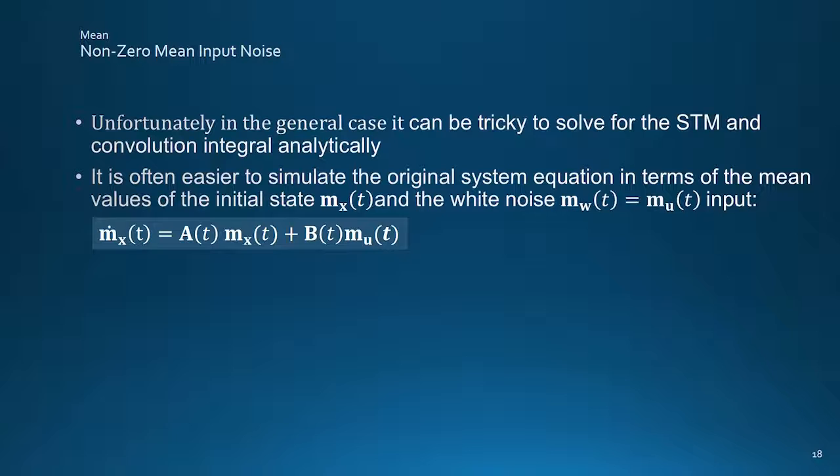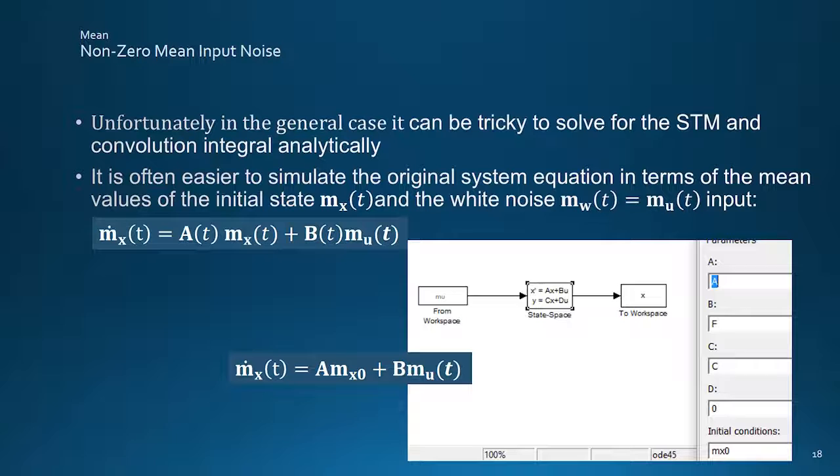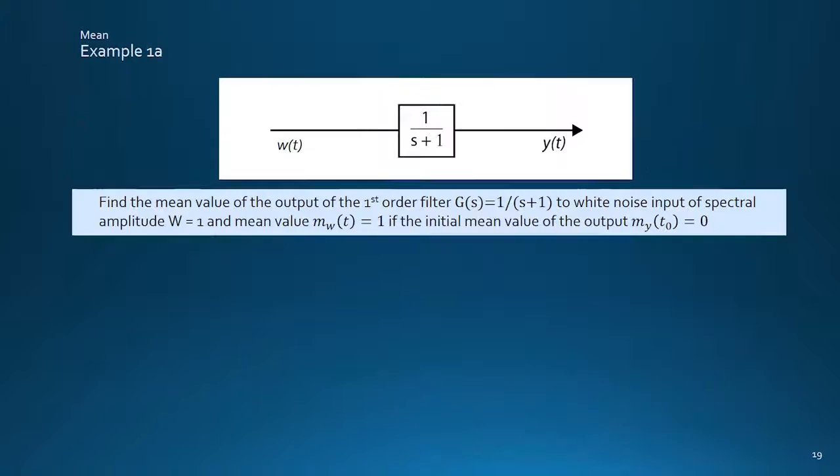Unfortunately, in general, both the state transition matrix and the convolution integral can be hard to solve analytically. So it's often easier in practice to numerically simulate the original system equation, written in terms of the mean value of the system initial conditions and the mean input noise signal, as a deterministic input, as illustrated here for the LTI case. A numerical integration routine, such as MATLAB's ODE45, shown later, being required for the more general time varying case.